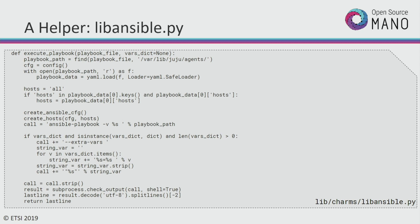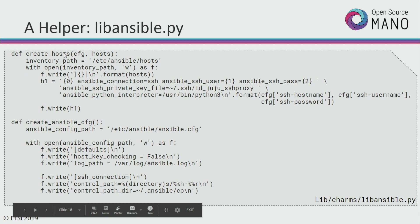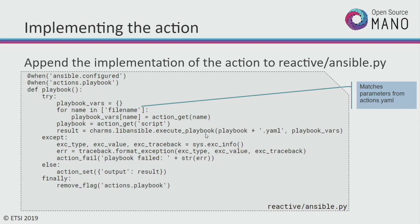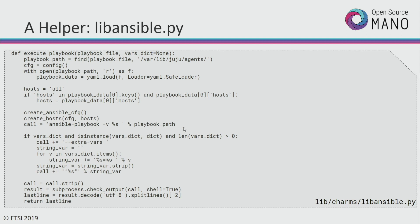Remember earlier there was the call to "execute playbook" in the implement action section. What that one does is it actually just looks for the playbook file inside of the charm and executes Ansible playbook on that file, so you don't need to worry about where the path is — it'll just find it for you. It converts that dictionary of key-value pairs from the environment to an Ansible command line, and then Ansible will go ahead and run the playbook for you.